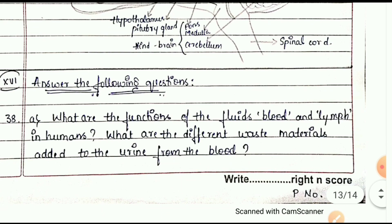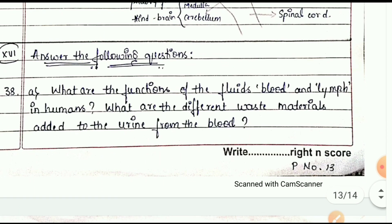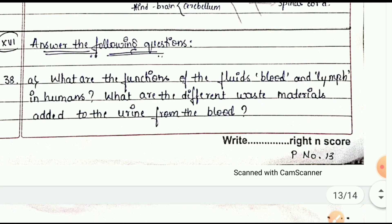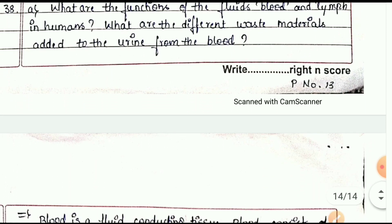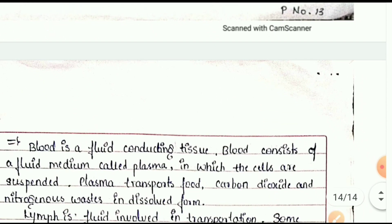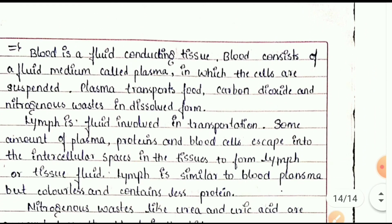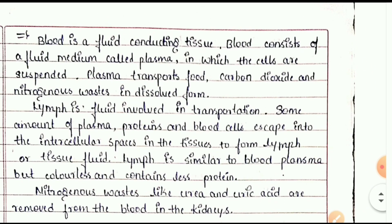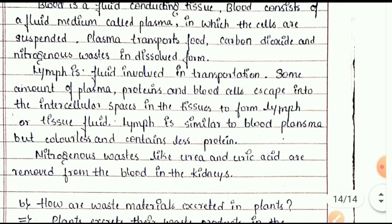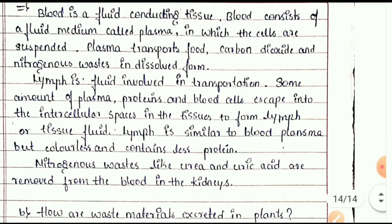Question 38 is a five-mark question. What are the functions of the fluids blood and lymph in humans? What are the different waste materials added to urine from the blood? See the total answer shown.